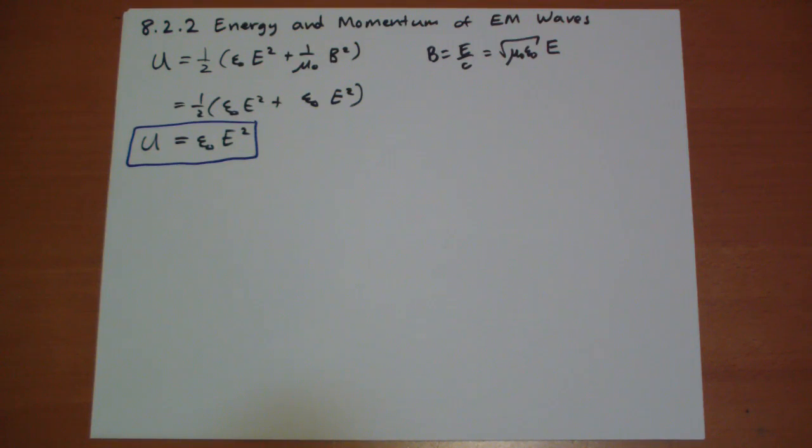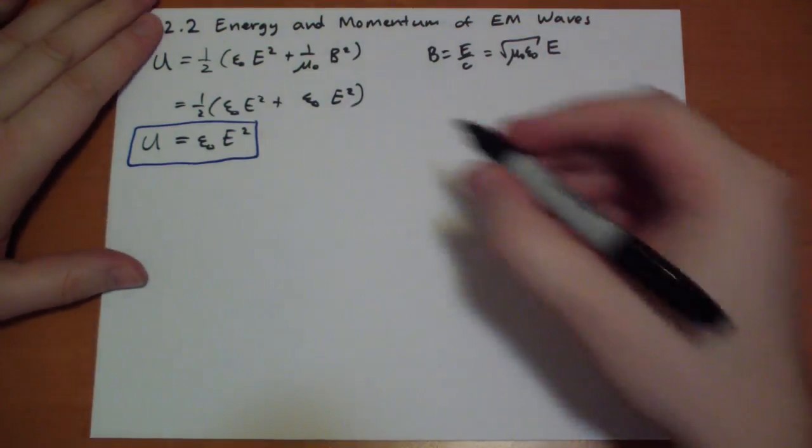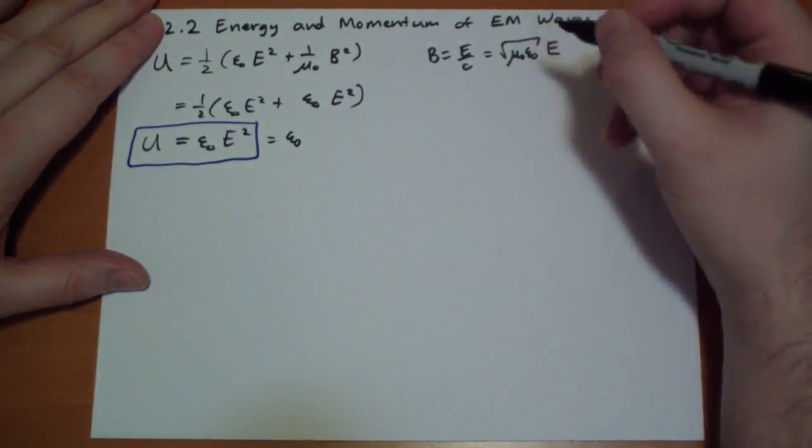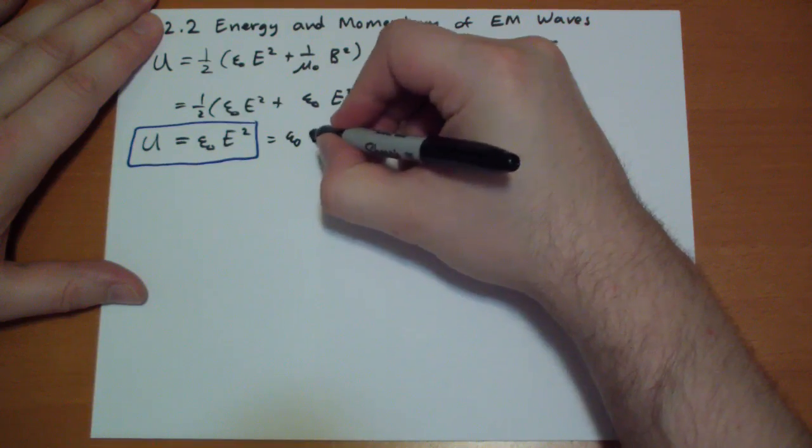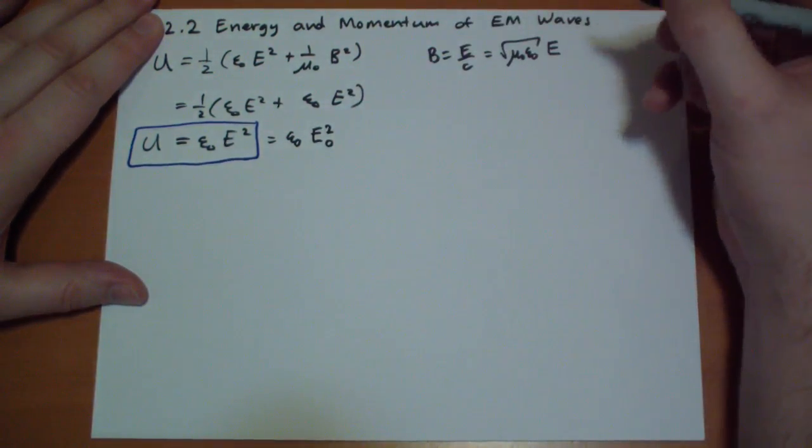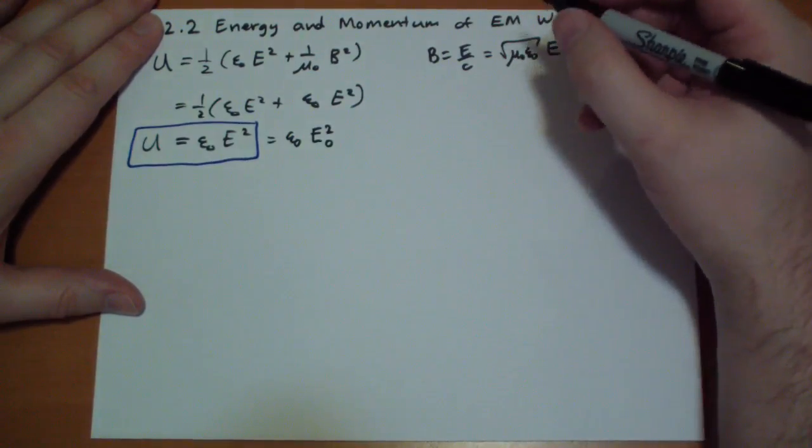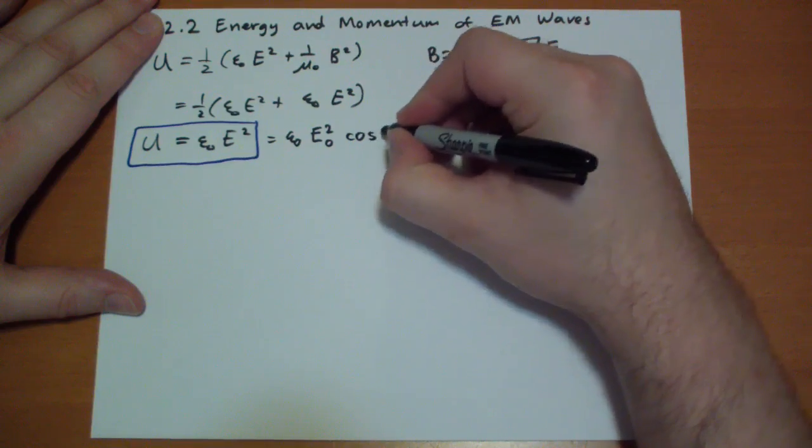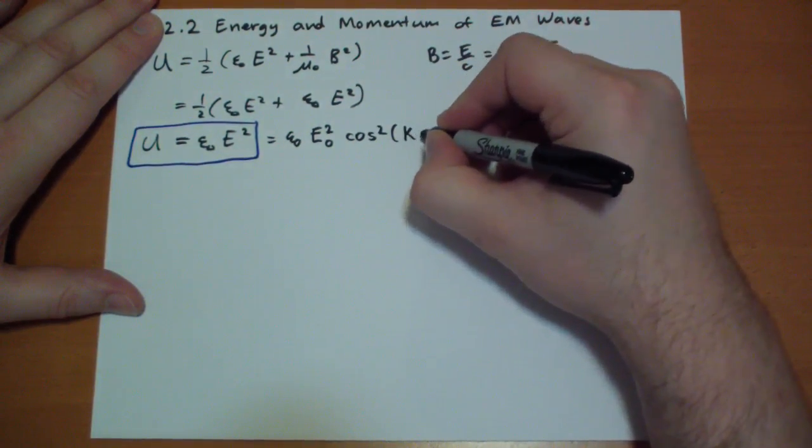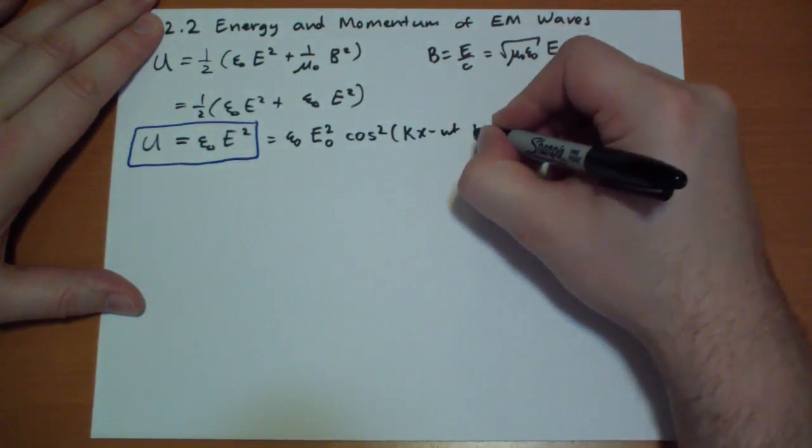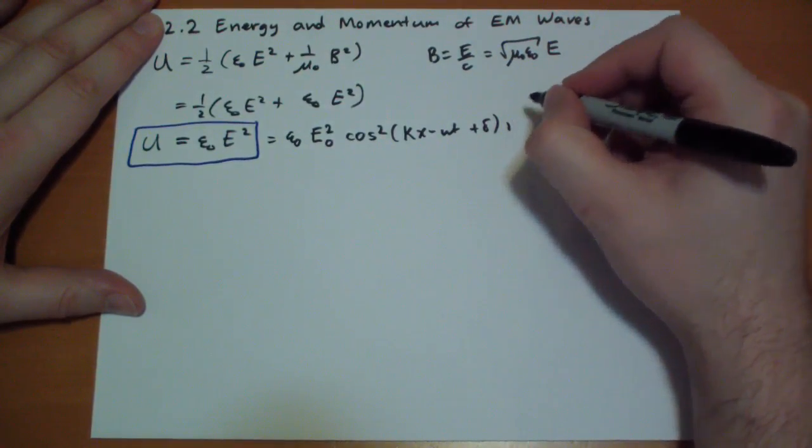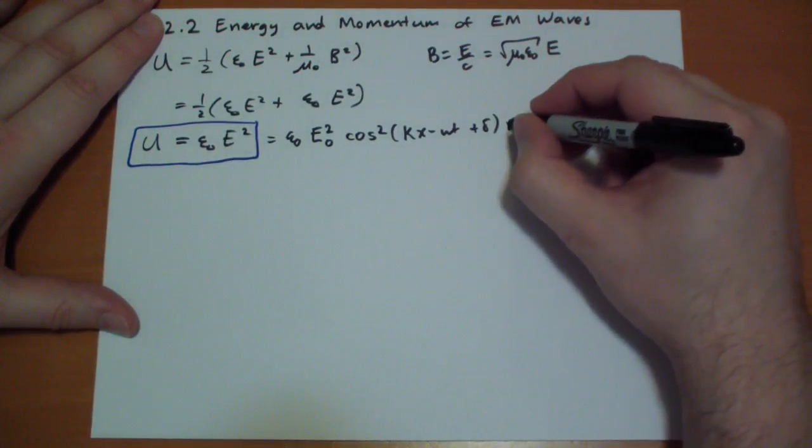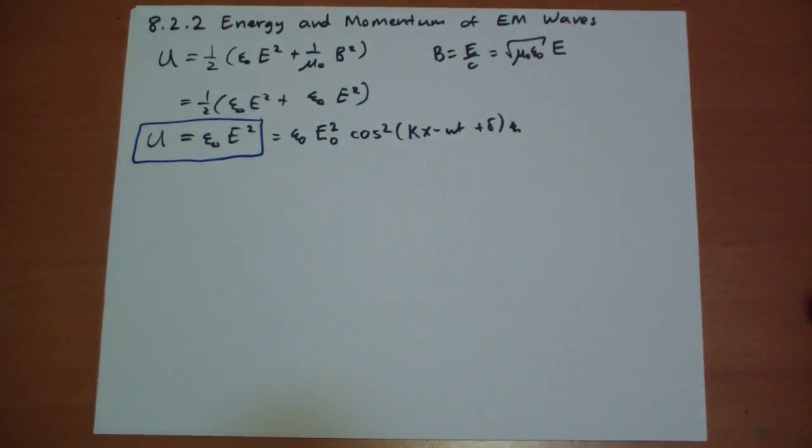Let's write out the equation for that. So E squared is, we're going to have epsilon-naught, what's E squared? That's our epsilon, or E-naught, I just realized I did something wrong in the last video, but it's a tiny mistake and you'll catch it. Cosine squared of kappa x minus omega t plus delta in the n-hat direction, but we don't care about n-hat direction, so ignore that. That is the energy at any given point in time or space for a monochromatic plane wave.